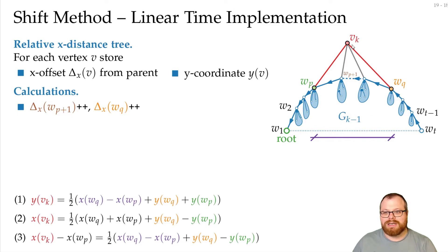Now we want to calculate the coordinates for V_k. For that, we need the x distance between W_q and W_p. That means we have to sum up all these x distances on this path here. Once we have that, we can simply calculate this x distance by this formula and the y coordinate by this formula.